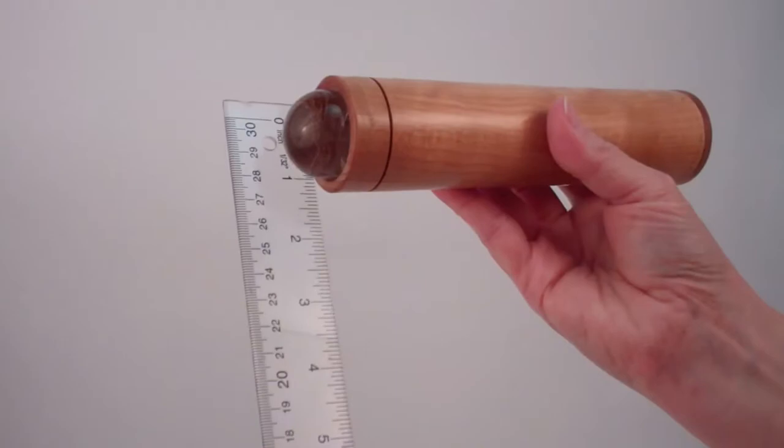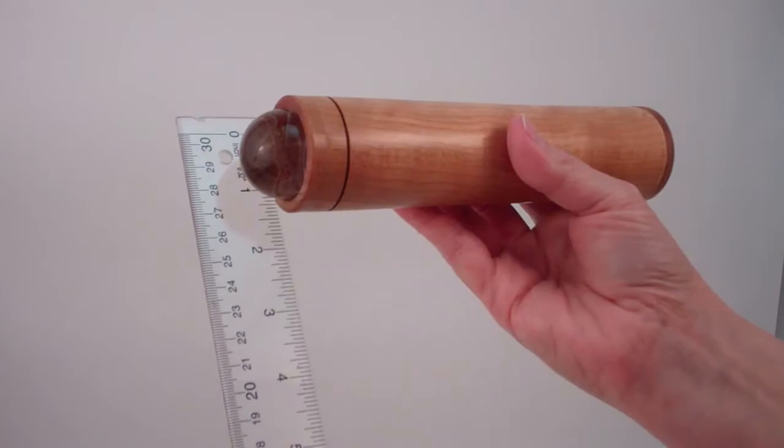The diameter of the ball lens at the end is 1 and 3 eighths of an inch.